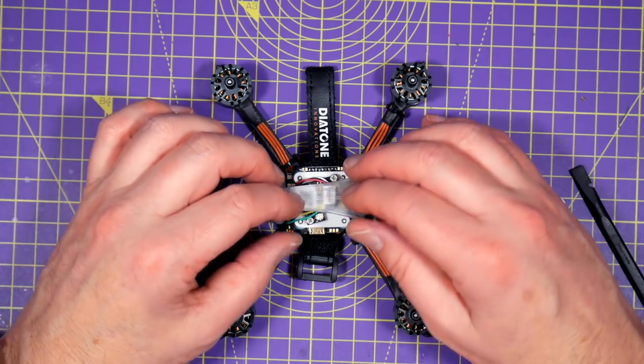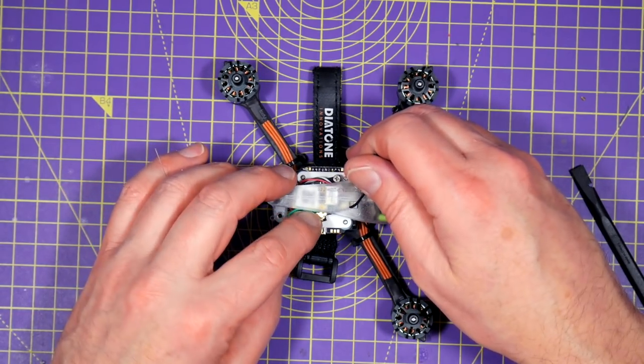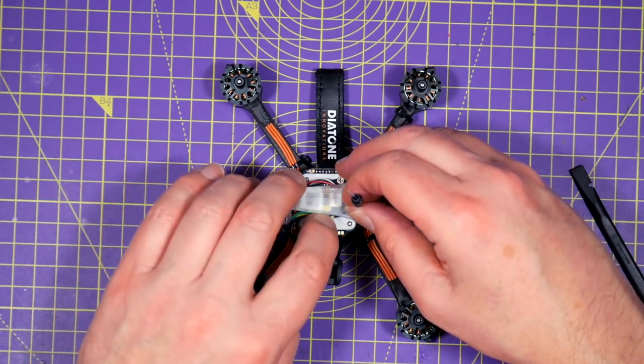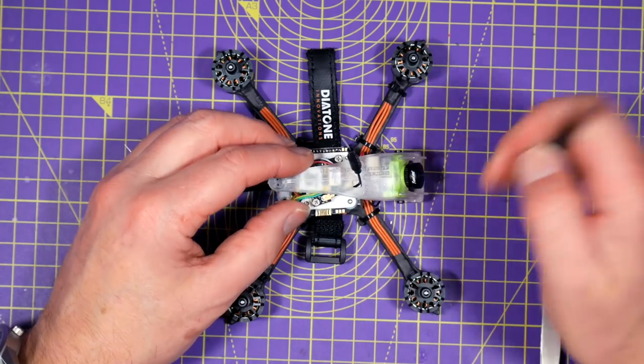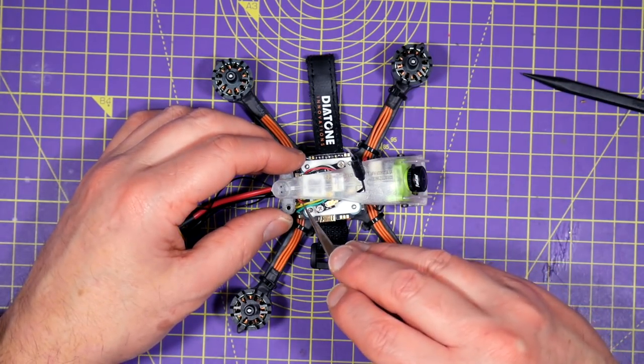Next up we need to reconnect the dipole antenna. Just feed it through the top and push it very carefully onto the UML connector on the top of the VTX board. Just make sure that all the wires are neatly tucked underneath the canopy so they don't get caught on the props.